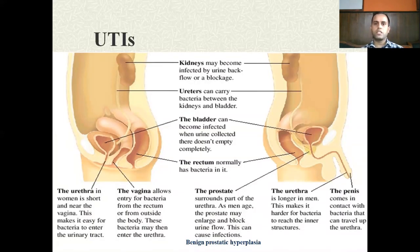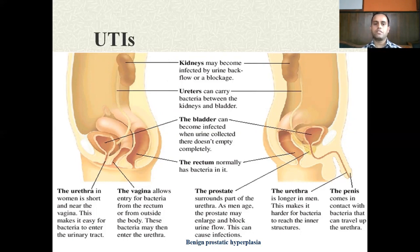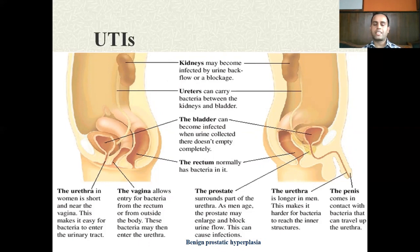Because of anatomy, women are more prone to UTIs compared to men. The urethra in women is generally short — only 3 to 4 centimeters — and its placement is near the vagina, making it easy for bacteria to enter the urinary tract. The vagina allows entry of bacteria from the rectum or from outside the body, which can then be transferred into the urethra. In men, the urethra is 20 centimeters long, making it more difficult for bacteria to reach the inner structures.